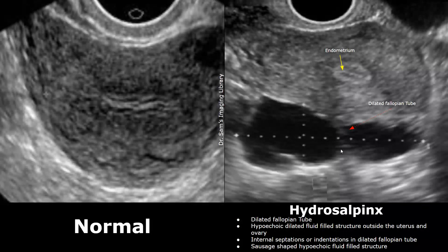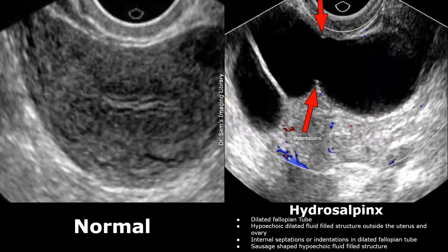Hydrosalpinx is a condition where a fallopian tube becomes blocked and filled with fluid. This can result from infection or other causes, and it often affects fertility. A normal fallopian tube is not visible on ultrasound. Hydrosalpinx appears as a dilated, fluid-filled, hypoechoic structure outside the uterus and ovary. This structure will have internal septations and indentations. Here is another image showing internal septations and indentations in a fluid-filled structure found outside the uterus and ovaries.